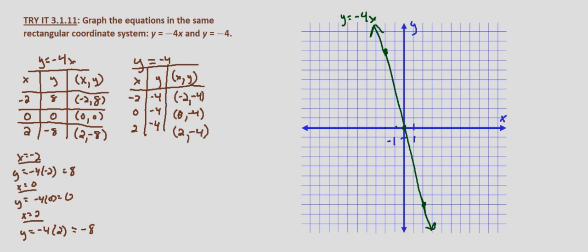So essentially we just go to y equals negative 4, pick any points we want on that horizontal line, and draw a line through those points. That is the line y equals negative 4.